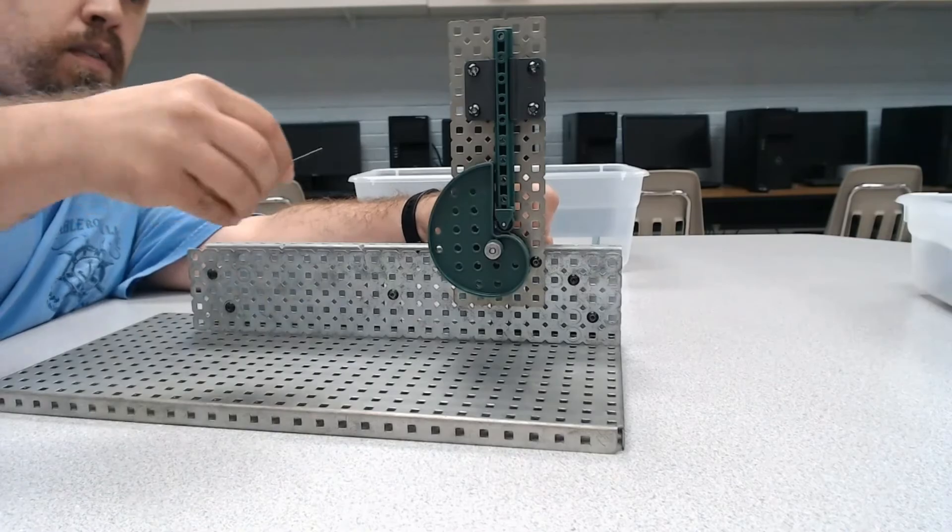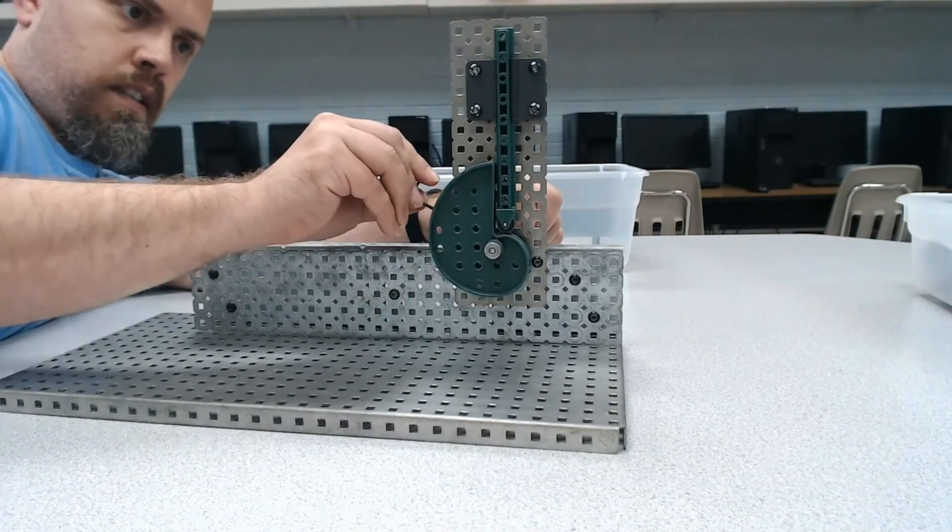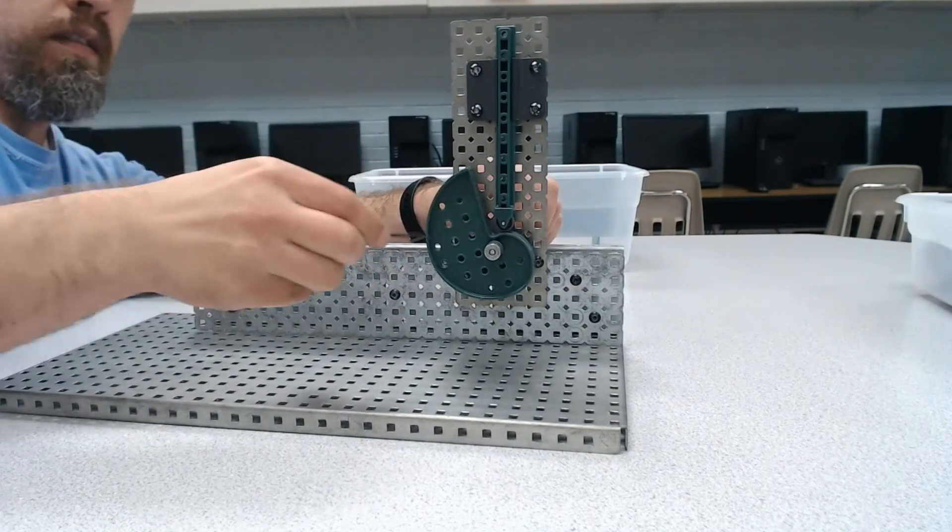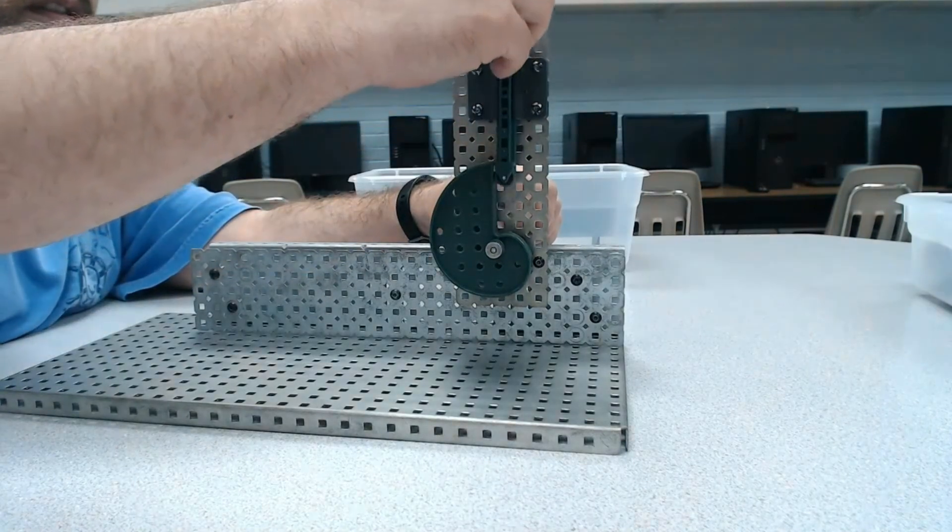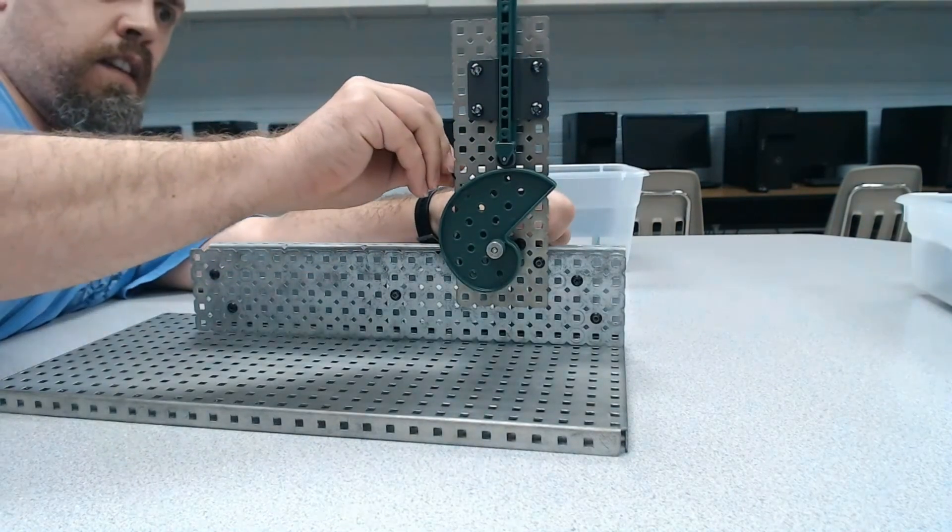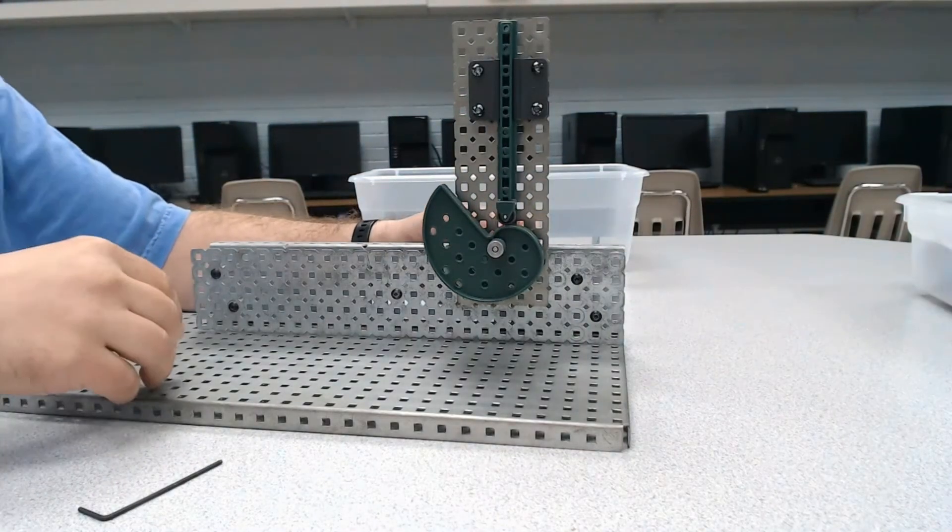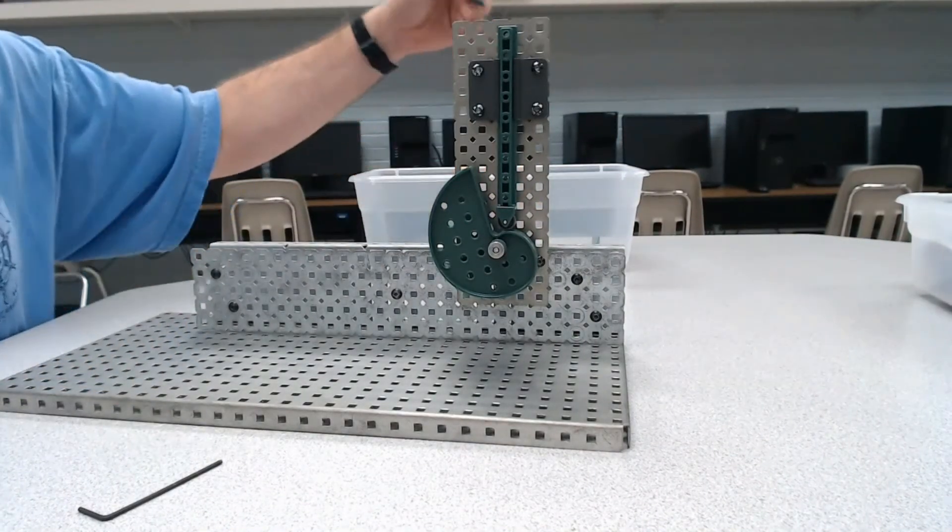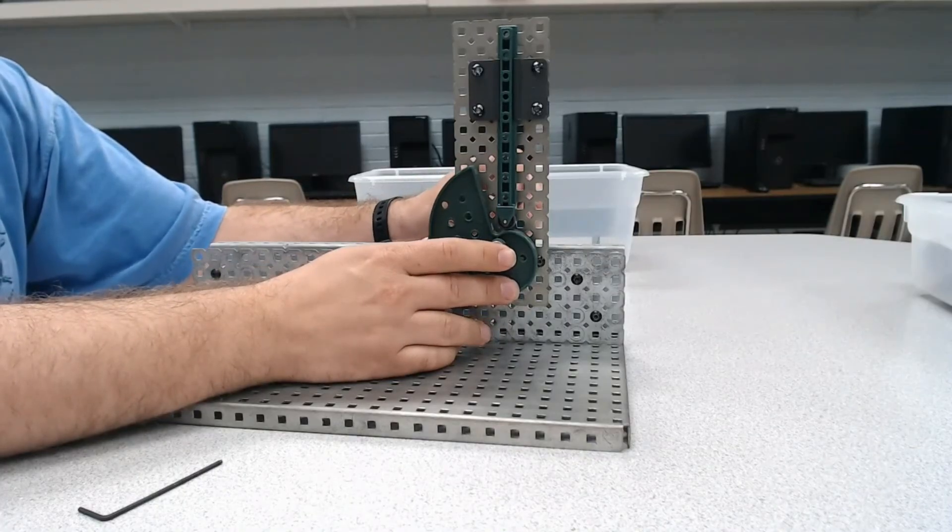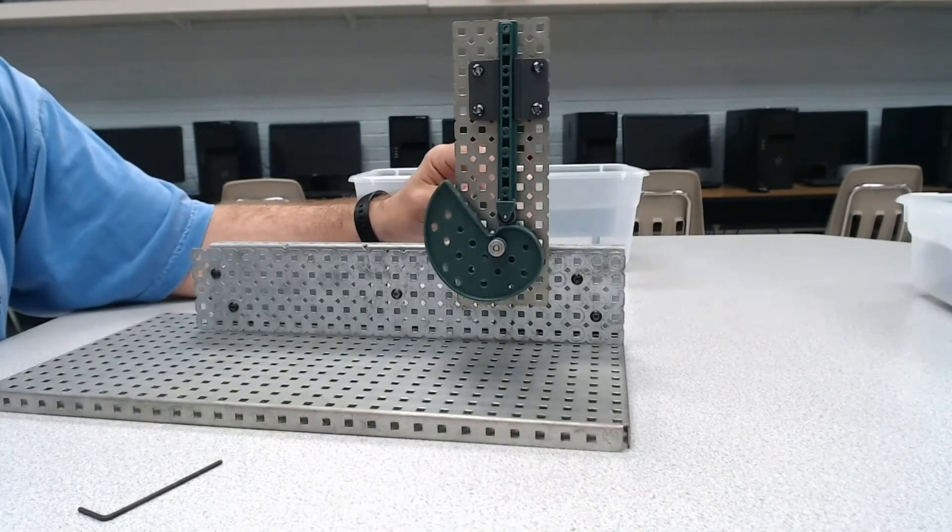Let's lift that up for a second and tighten this one down. There we go! Now we have this built in place and all we need is a handle. Handle on the drive shaft, and now we've got a cam and follower working.